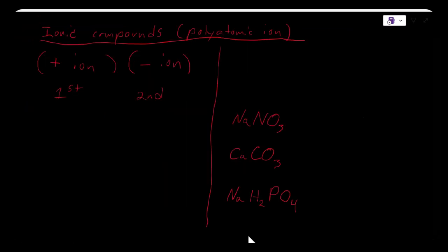Next, we can look at ionic compounds that have polyatomic ions. To name ionic compounds with polyatomic ions, we first name the positive ion, and then we name the negative ion. When we name the positive ion, we name the metal that the ion was formed from, and then we name the negative ion.